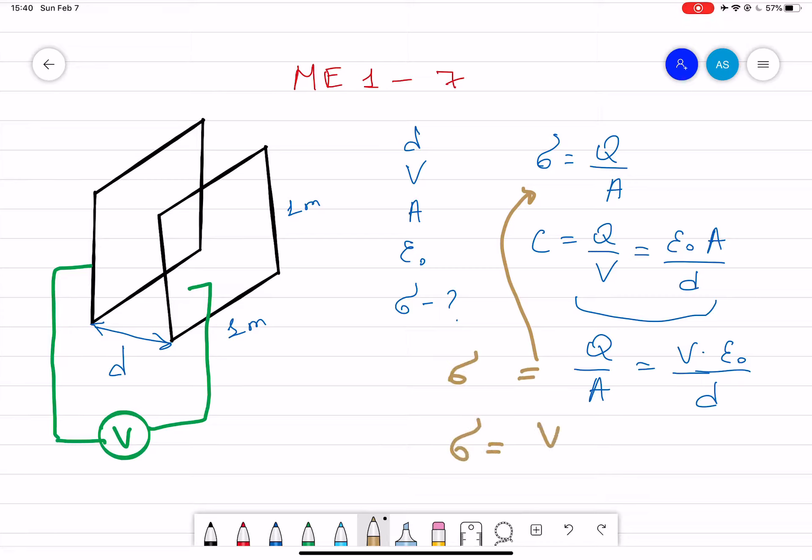For the final formula, V multiplied by epsilon naught divided by d. If you plug the numbers, you should get the answer.